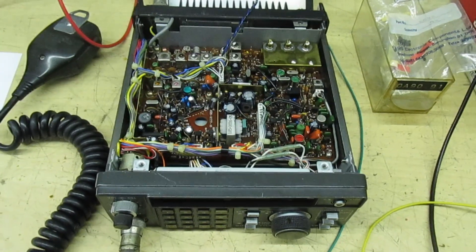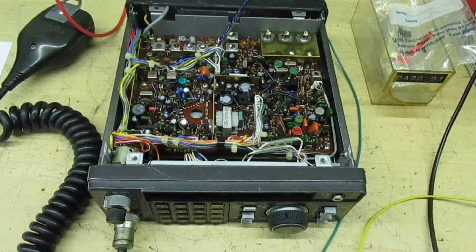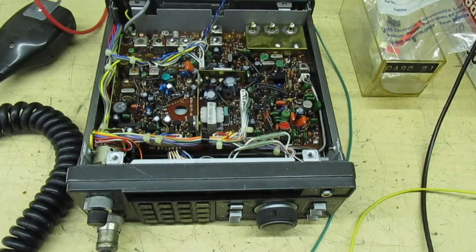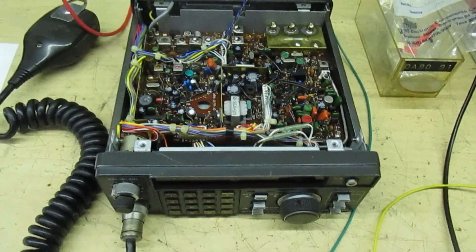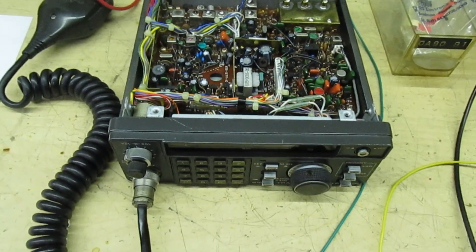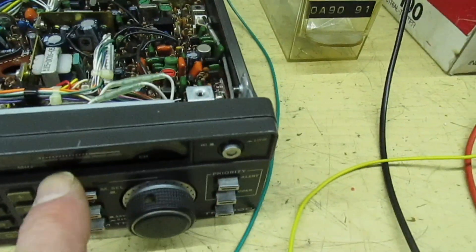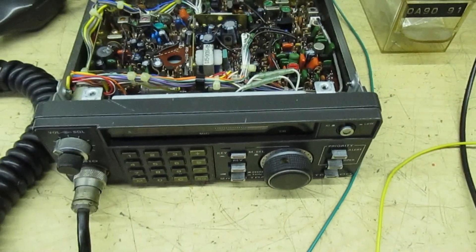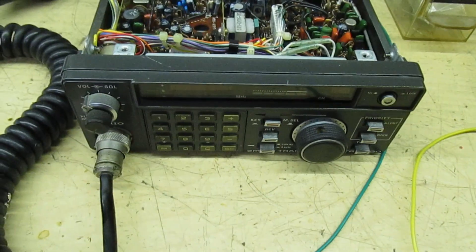This is a trio TR 7800 and he said the complaint with it was it's all working fine. When you transmit, the S meter bar graph goes across, but when you're receiving there's no indication on the signal meter. It's completely dead, none of the segments are lit.